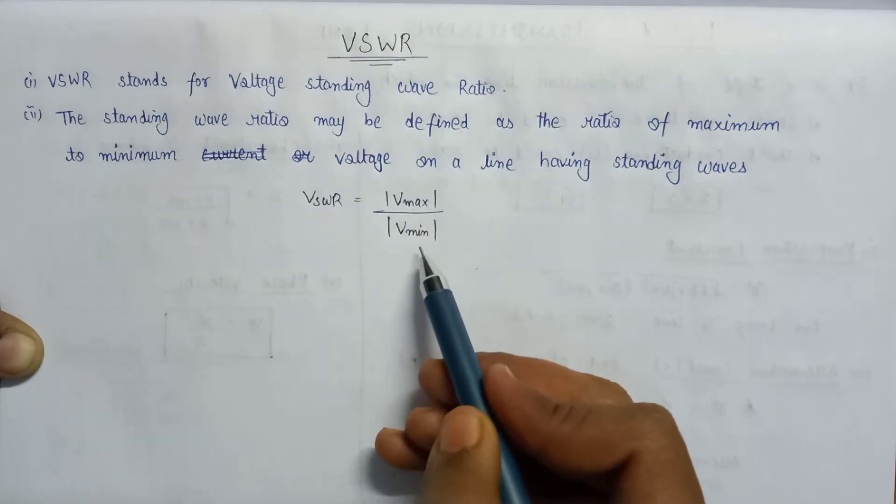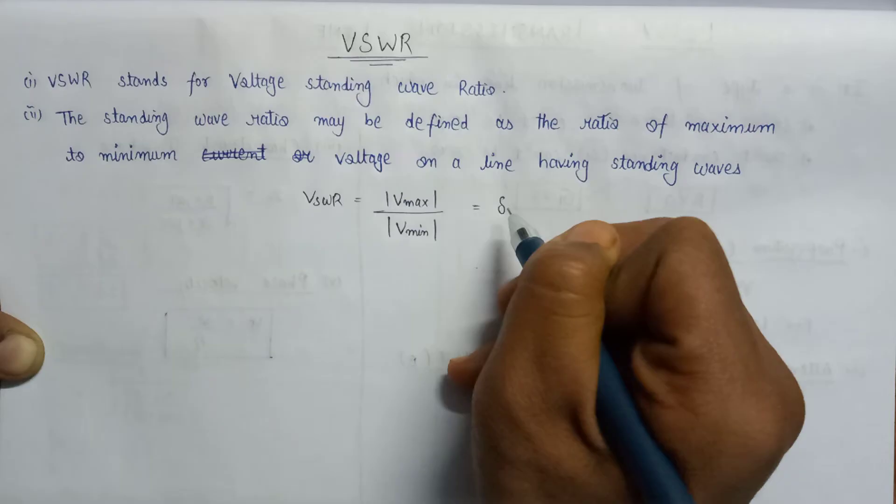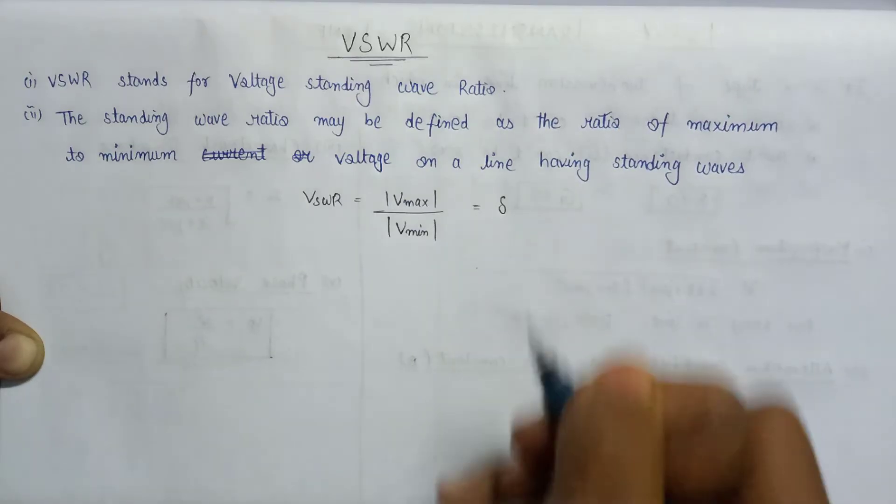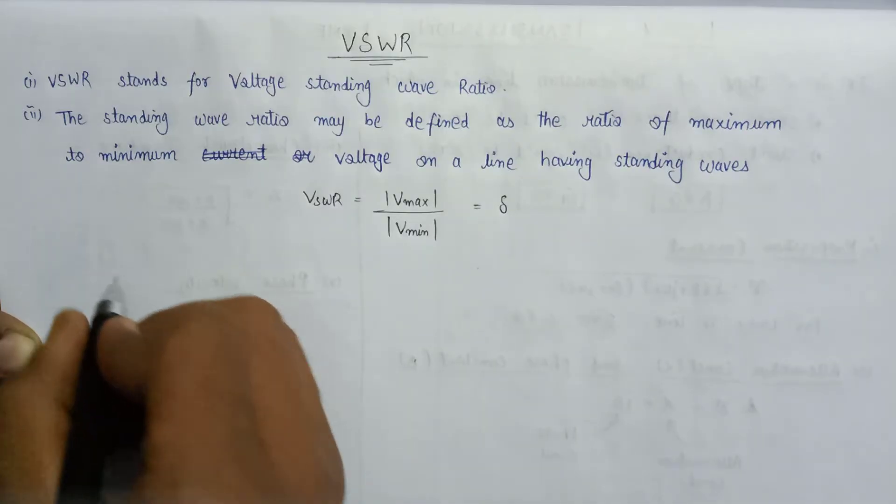VSWR can also be denoted by the del symbol. Now for the perfectly matched line, the value of VSWR is exactly equals to one only.